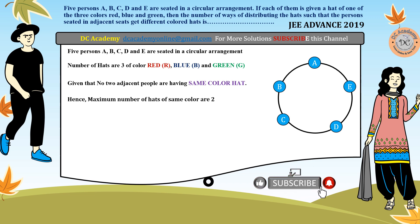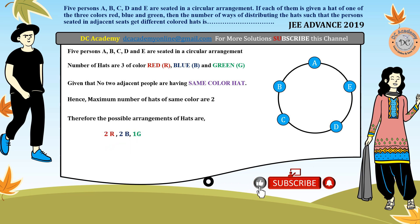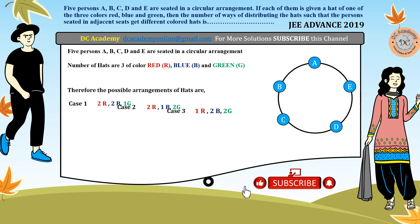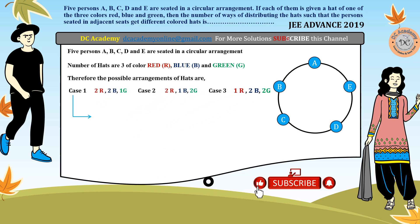So the possible arrangements will be either two red, two blue, and one green; or two red, one blue, two green; or one red, two blue, and two green. We need to consider case 1, case 2, and case 3. We concentrate on case 1, because if we understand case 1, all other remaining cases will be understood — it's only about the color, so mathematically nothing changes.